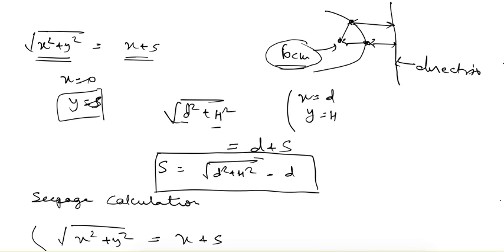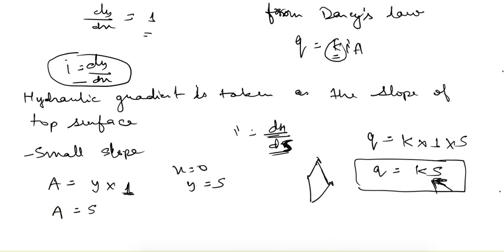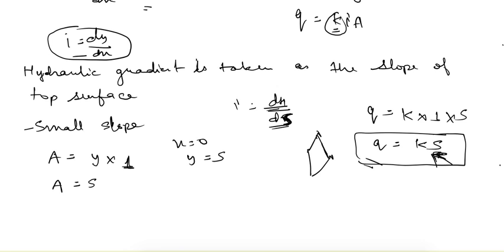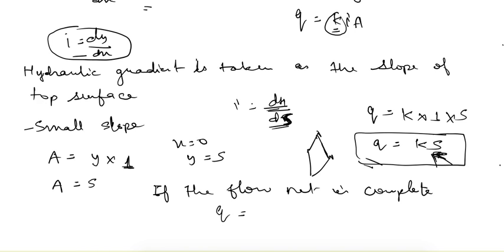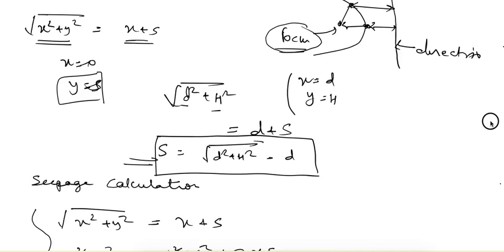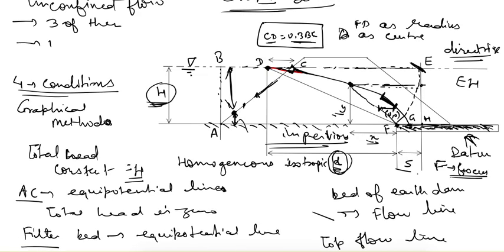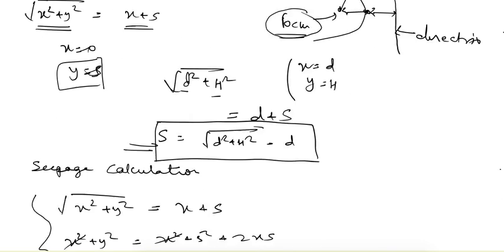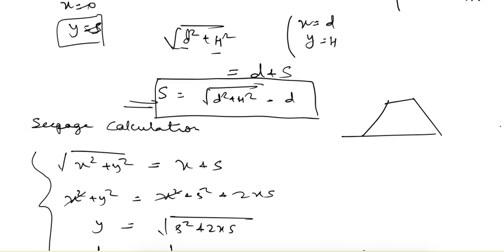Once s is found, the discharge is calculated as q = ks. Alternatively, if the full flow net is plotted, discharge can be found by the universal formula q = k·H·(Nf/Nb), where Nf is the number of flow tubes and Nb is the number of equipotential drops.